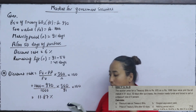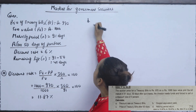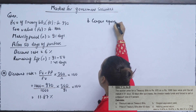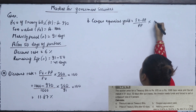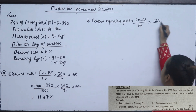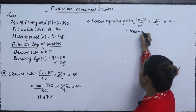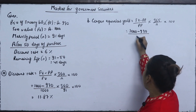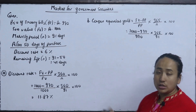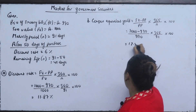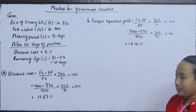The coupon equivalent yield is: (FB − PP) / PP × (365 / n) × 100 = (1,000 − 970) / 970 × (365 / 91) × 100 = 12.41%. This is the coupon equivalent yield.